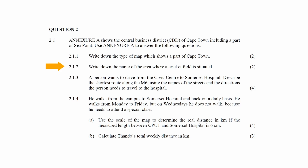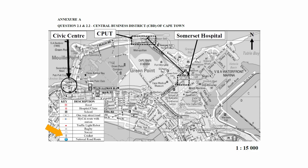In Question 2.1.2 you have to write down the name of the area where the cricket field is situated. From the key and description list in Annexure A we see the symbol for the cricket field, and on the map this symbol is located in the area known as Greenpoint.